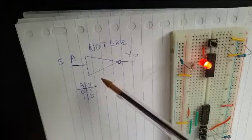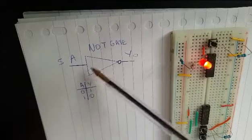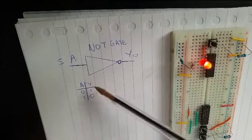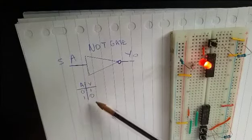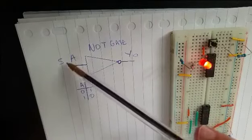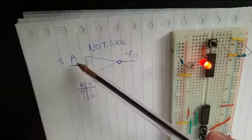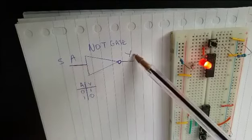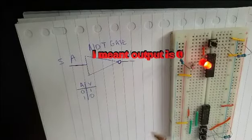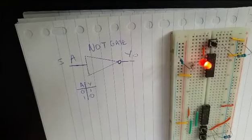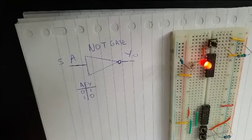Just to remind you, the NOT gate symbol looks like that and the truth table is like that. If you have 0 input the output will be 1, and if you have 1 input the output will be 0. If you are not familiar with that, please go back to my episode where I explain all the logic gates and all the truth tables.